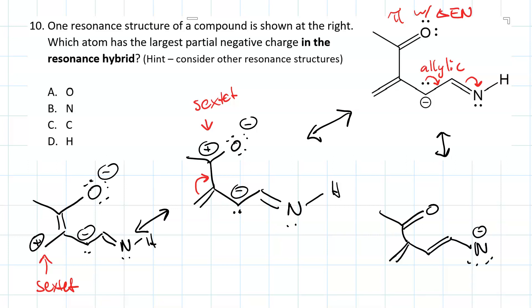Now we have a nitrogen with a partial negative charge. That's probably better because nitrogen is more electronegative than carbon. So, B would be the best answer.